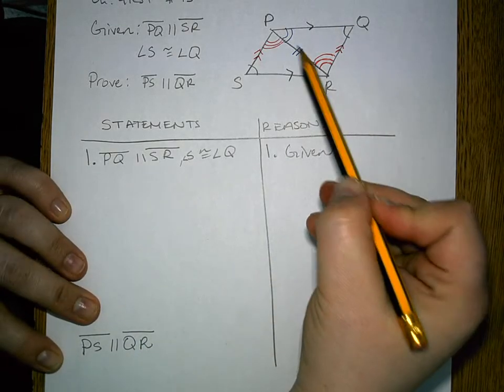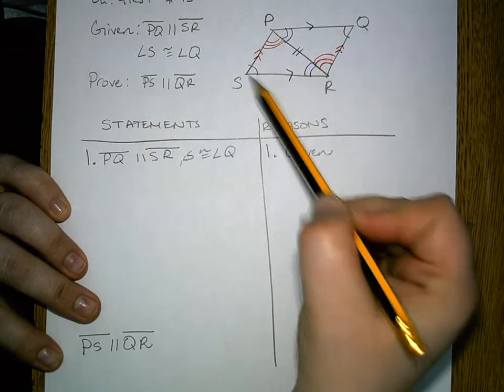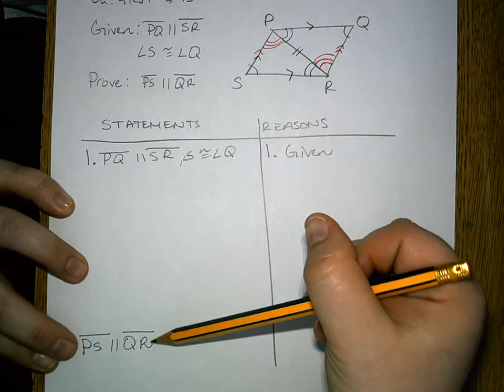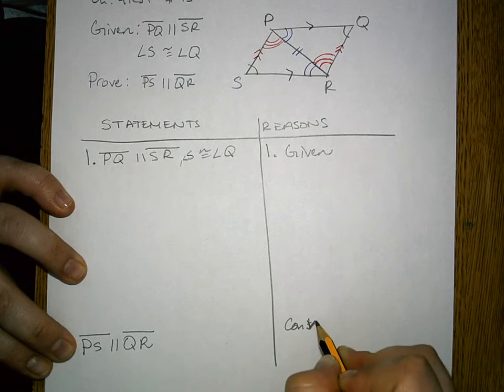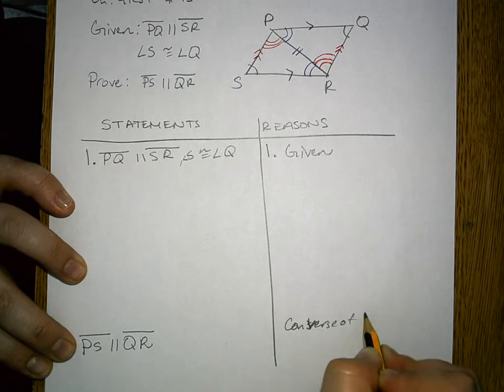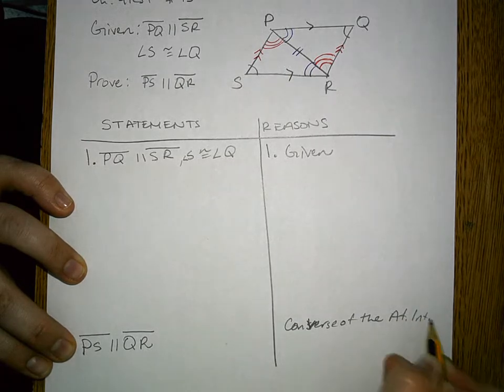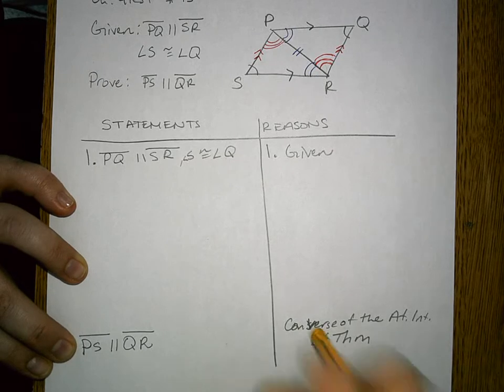Since you were already able to figure out from your triangles here, that this is going to be true by the converse of the alternate interior angles theorem, then you can write that reason.